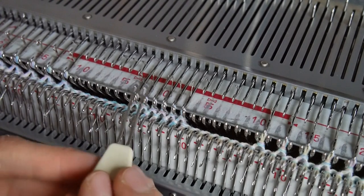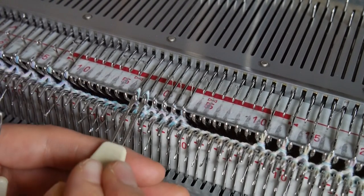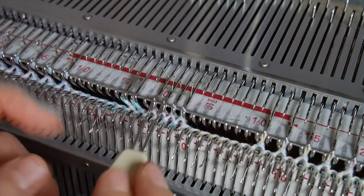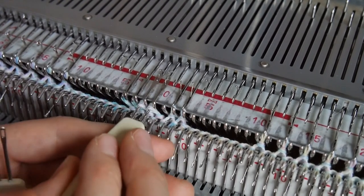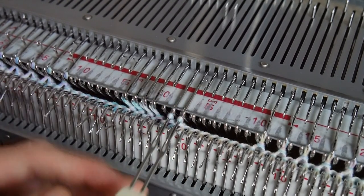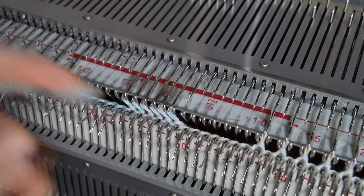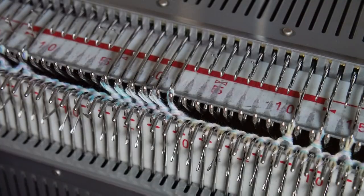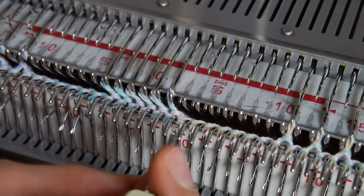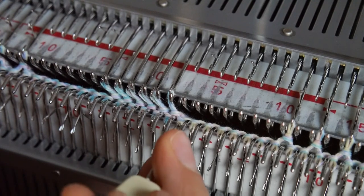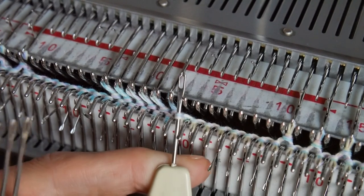Now you have 6 stitches. Transfer all of them 1 stitch to the left. Pick up the purl bar of the stitch from the ribber bed to form 2 new stitches like so.